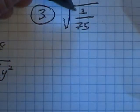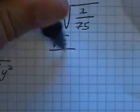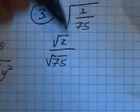So I got root 2/75. Well, it's the same as root 2 over root 75. Everything in there is square rooted.